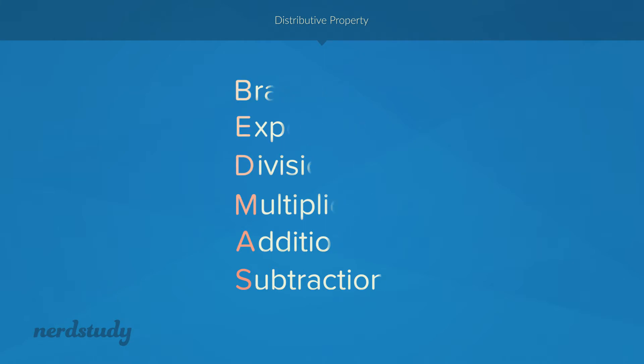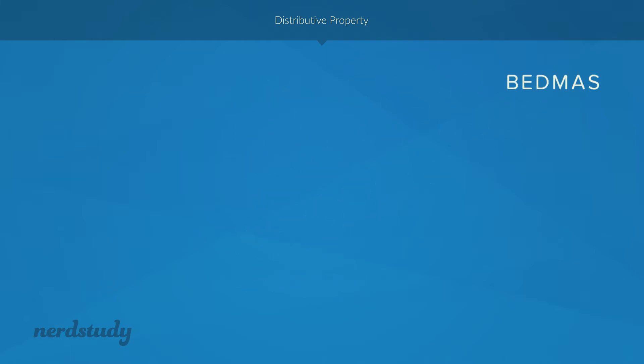Okay so when we're using the order of operations and we see a question like this 4 times bracket 2 plus 3, we know right away that we need to do whatever is inside the brackets first. Of course 2 plus 3 is simply 5 and then we would drop the brackets and we will get 4 times 5 which equals 20. And I can imagine that whatever we just did right over here is probably very easy for you to understand.